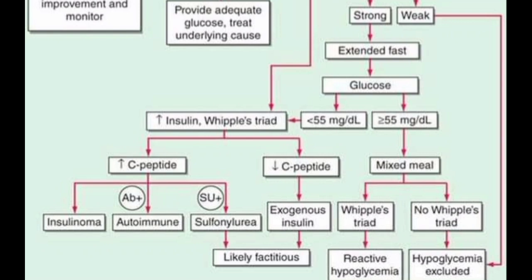We should know what Whipple's triad is — we mostly diagnose hypoglycemia through Whipple's triad. First, we check fasting sugar and if it is less than 55. Second, if there are symptoms of hypoglycemia like feeling lethargic, trembling, or sweating. Third, if the sugar level increases immediately when we inject IV glucose — then this triad is Whipple's triad. We then check insulin, and if insulin is increased plus Whipple's triad is present, meaning glucose is less than 55 mg/dL, we then check the C-peptide.